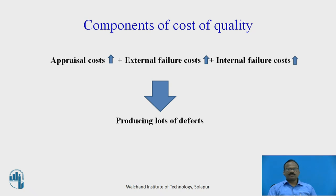Considering the components of cost of quality: if appraisal cost increases, it indicates a lot of defects are being produced. If external failure cost increases, it also indicates lots of defects. If internal failure cost increases, similarly it produces a lot of defects. To manage the cost of quality, we must concentrate on minimizing these three costs — appraisal cost, external failure cost, and internal failure cost — so that products are kept within specifications.